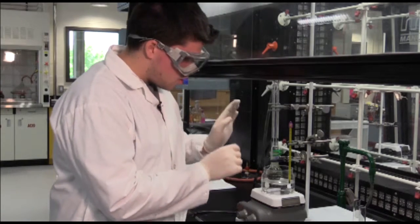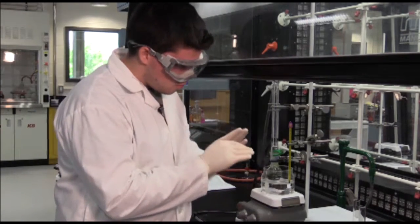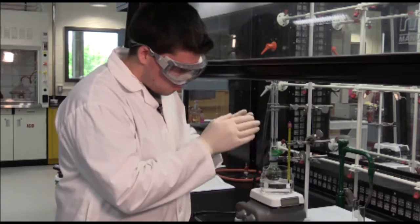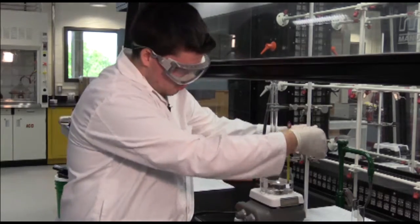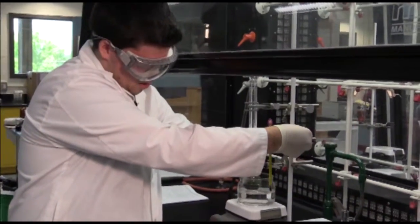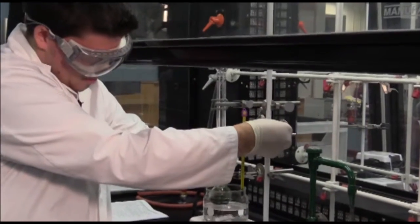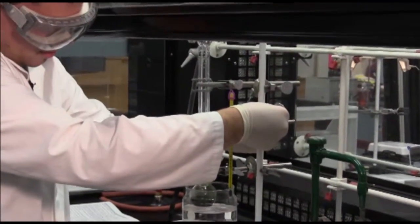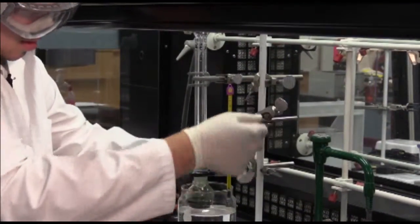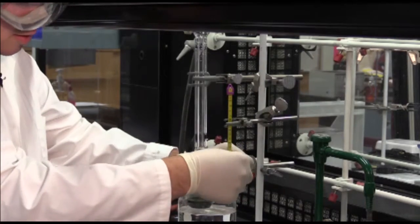Once your heat is off, you can now raise your round bottom flask, condenser, and thermometer up. So first we'll raise our thermometer up out of the oil bath, then next we'll raise our condenser up.